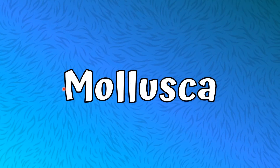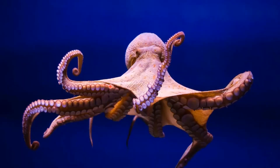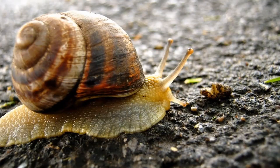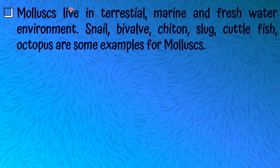Let's talk about our third Invertebrate type: Mollusca. Molluscs live in terrestrial, marine, and freshwater environments. Snail, bivalve, chiton, slug, cuttlefish, and octopus are some examples of molluscs.